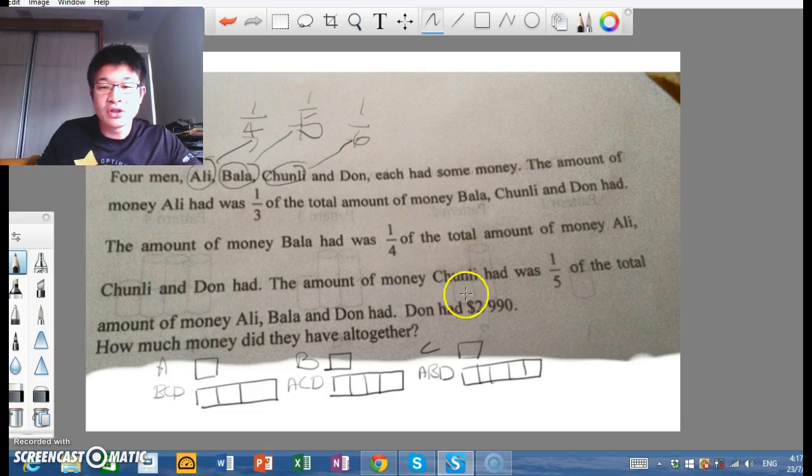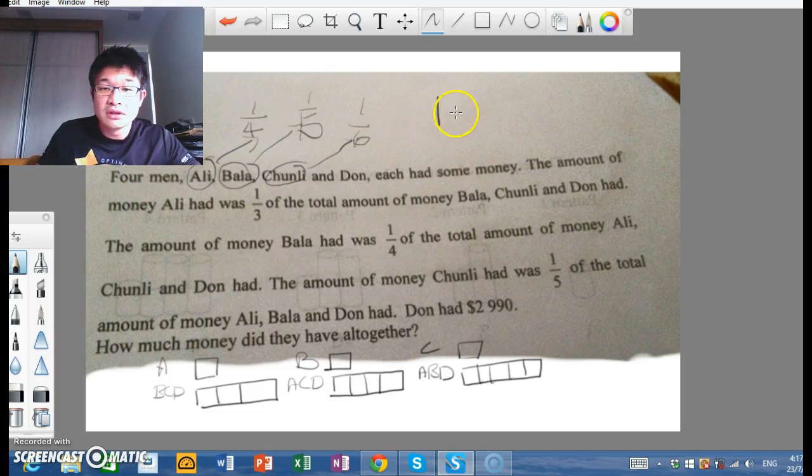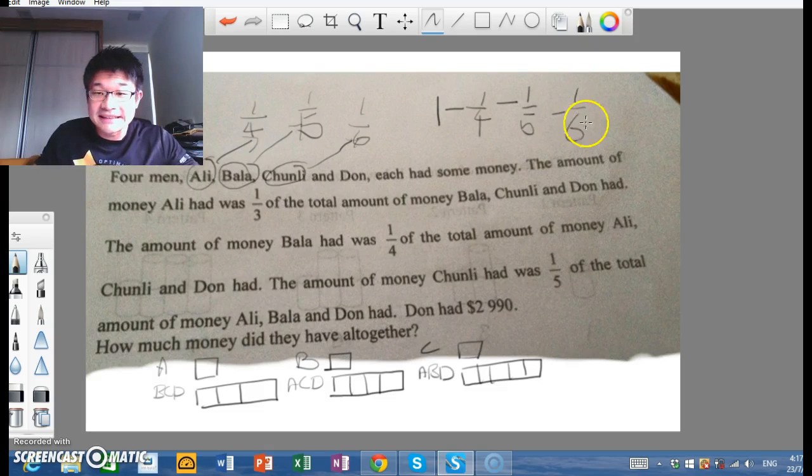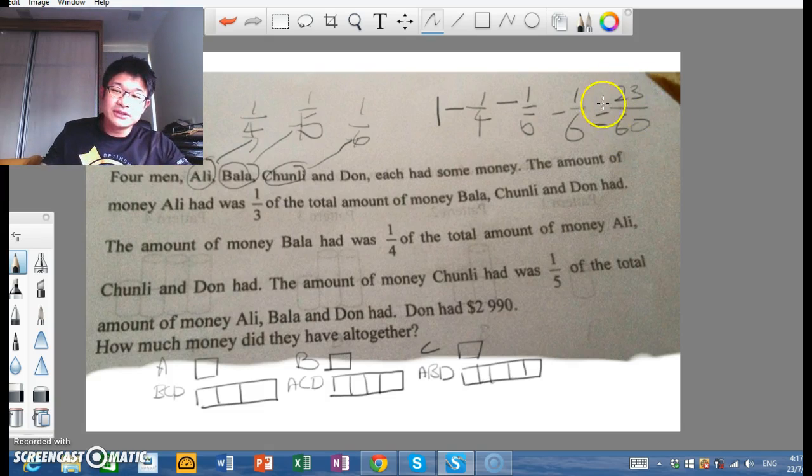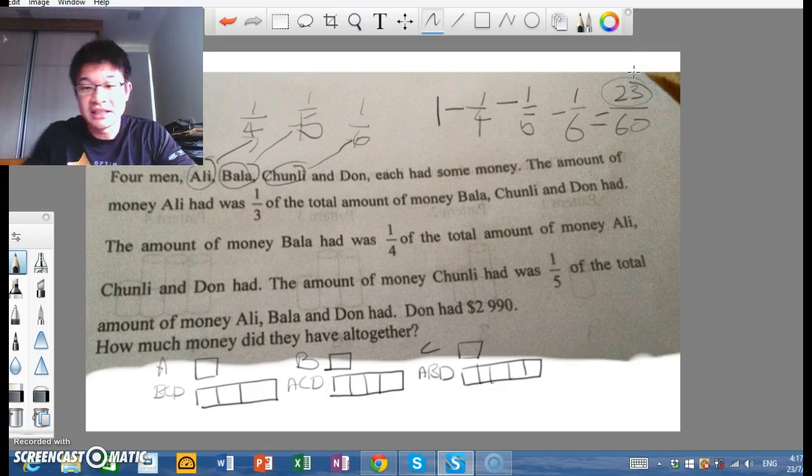So to find Don's money, it's actually as straightforward as having just one whole, subtract one-quarter, subtract one-fifth, and subtract one-sixth. You get a nice fraction, 23 out of 60. So with this 23 out of 60, you know that this is the fraction of money that Don has.